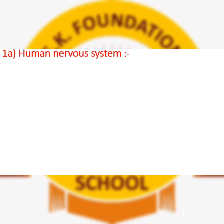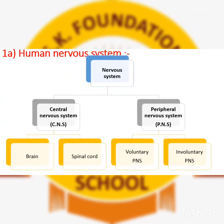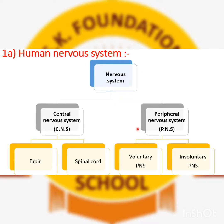The human nervous system consists of the brain, spinal cord, and two types of nervous systems. The nervous system has two parts: the central nervous system (CNS) and the peripheral nervous system (PNS). CNS has two parts — brain and spinal cord — and PNS also has two parts: voluntary PNS and involuntary PNS. For more detail, check part 1 video.